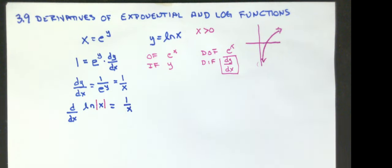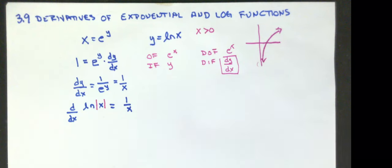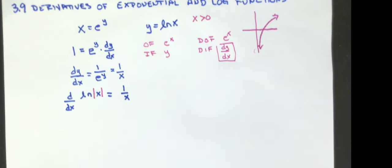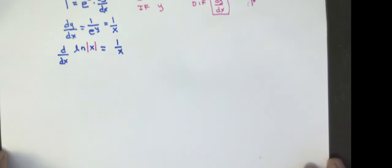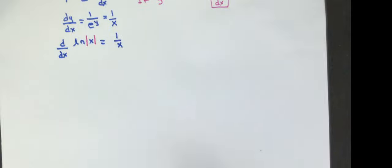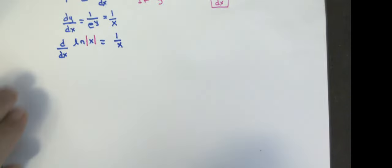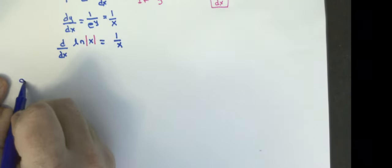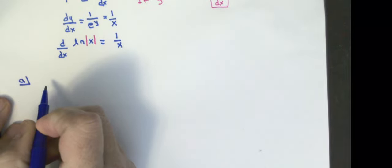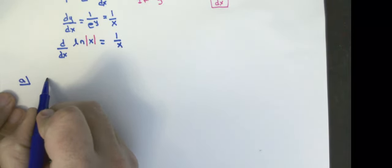I could use the chain rule, product rule, and other properties I've already covered in order to solve problems that have natural logs in them. I'm going to do three quick examples. The first one: y equals the natural log of 4x.